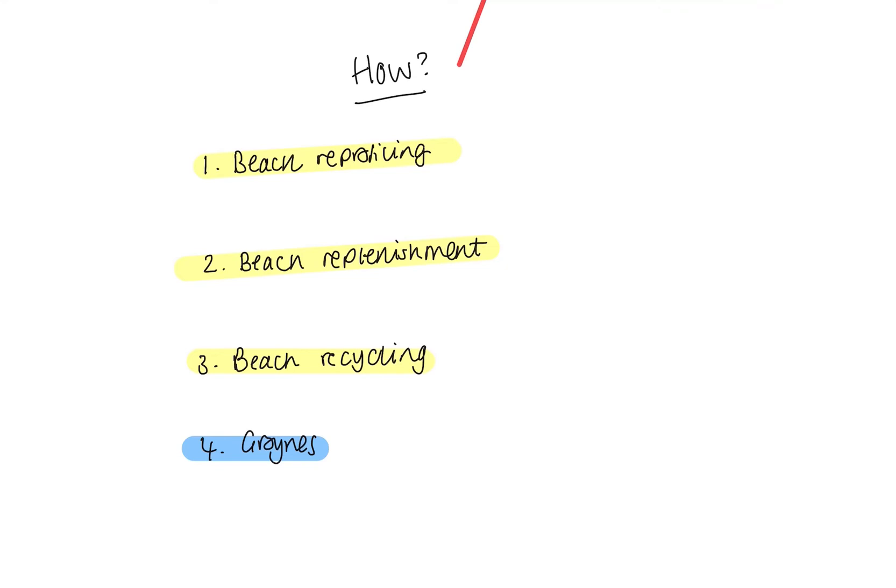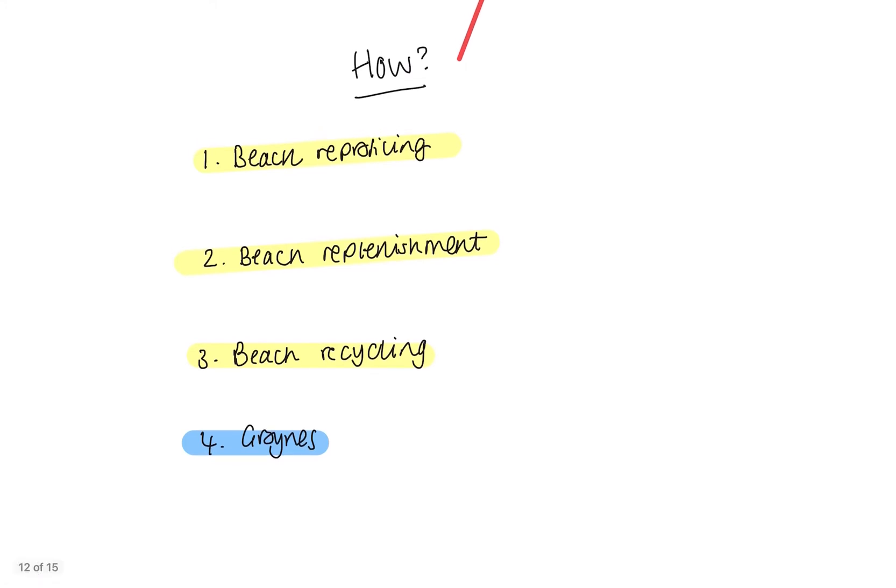So with beach recycling, three times a year trucks are brought in to move the material that's accumulated on the eastern side of the beach back to the western side. They're doing this to ensure that the beach has an even profile. If the beach has an even profile, it protects that western side that may have been left exposed because the sediment was removed.